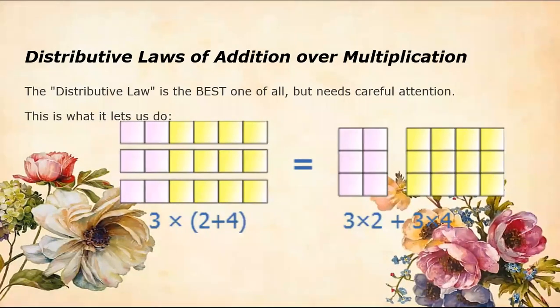Now let's talk about the distributive laws of addition over multiplication. It is the best one of all that needs careful attention. It's written addition over multiplication. It means that first we need to do the addition, but according to BODMAS, we are always multiplying before adding. So if we want to add first, we need to put brackets in addition. So we are adding first and then later on we are multiplying.